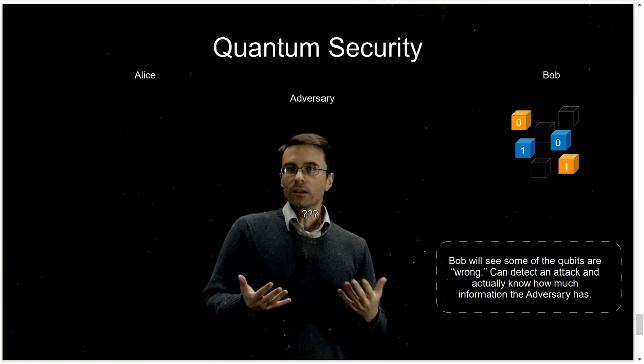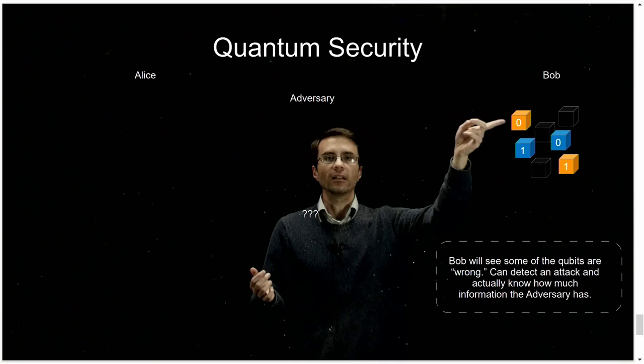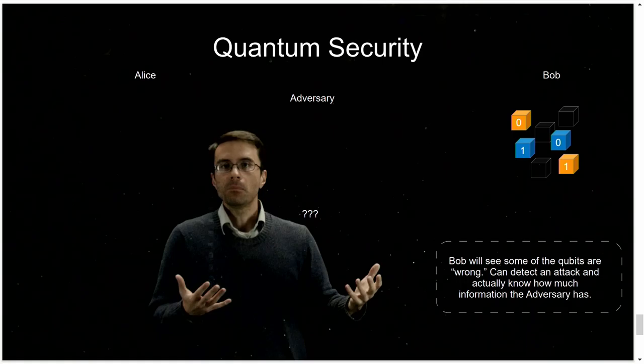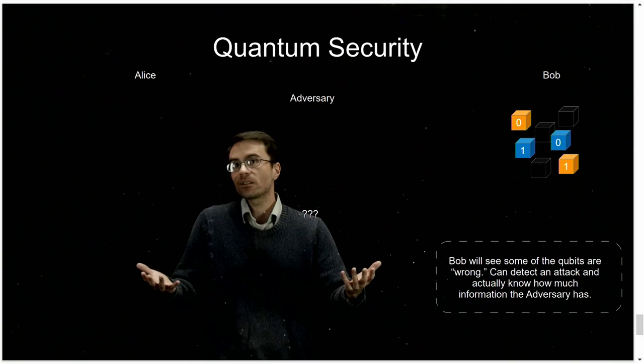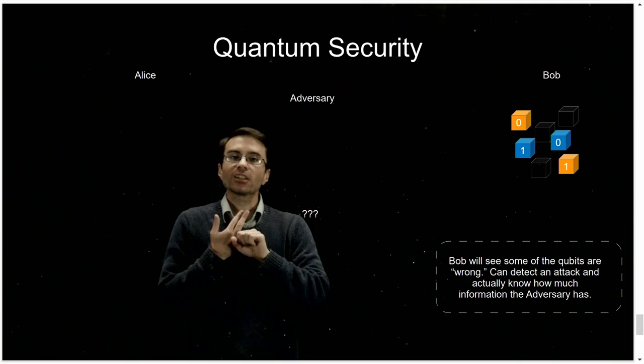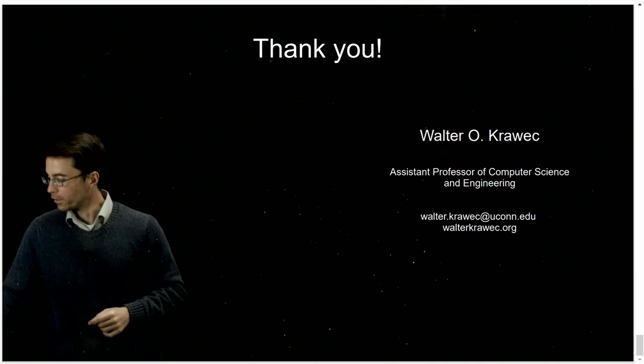Bob gets these results, and Alice now tells Bob what way to look — she tells Bob the color of the box. Bob knows which way to look, so he looks underneath here or to the left here, and gets the right answer. But there's some destroyed data — and this is going to tell Bob and Alice that someone tried to attack the data. You can't do this classically, because if someone attacks there's nothing you can do. But with quantum, you can play these cool games to actually detect attackers. You can actually determine how much information they gained based on how many bits were destroyed.